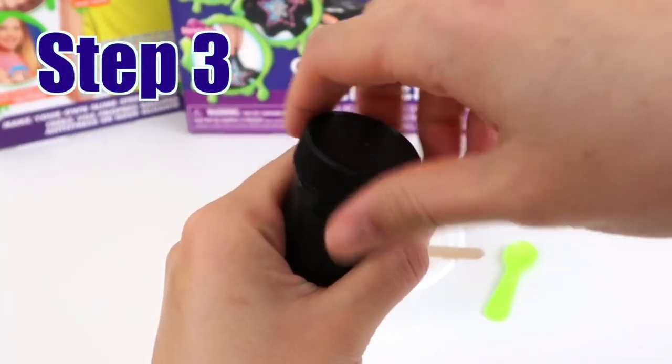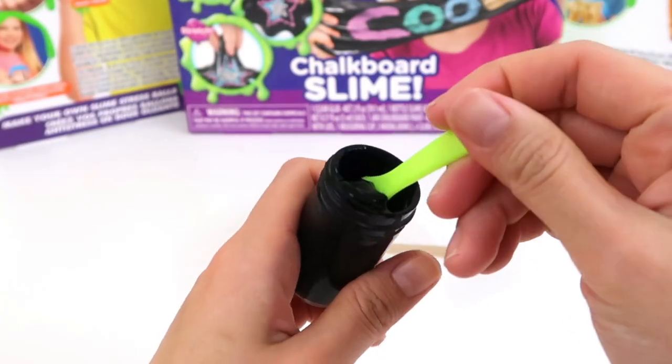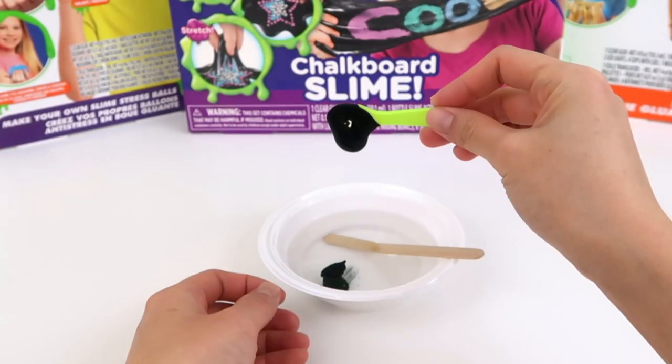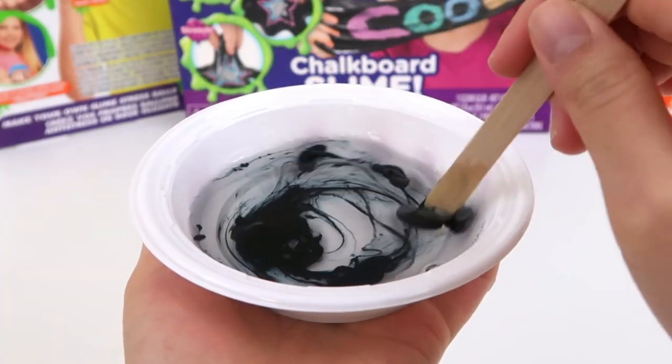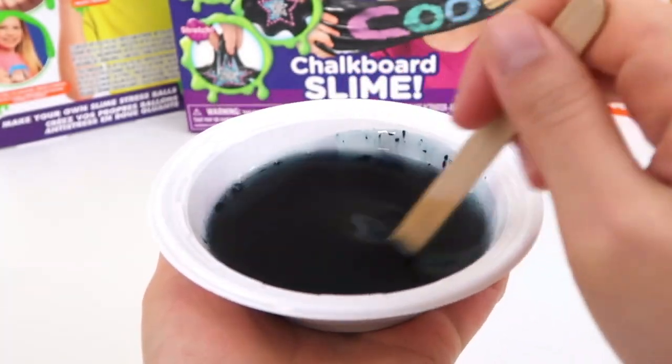Step 3. Add 2 spoonfuls of black chalkboard paint. Ooh, the mixture became so black now! It's as if octopus ink!